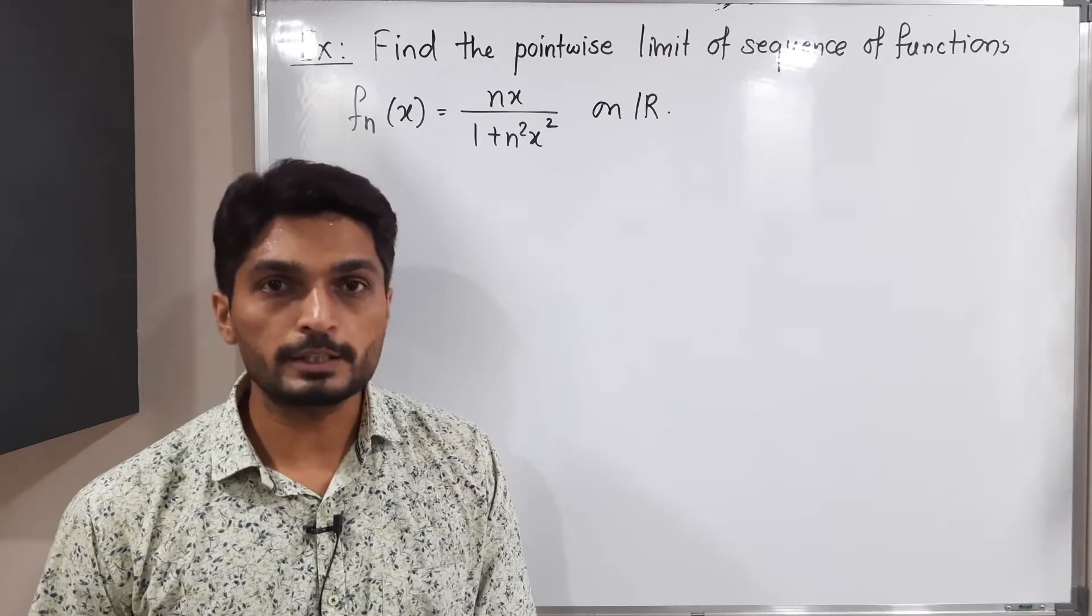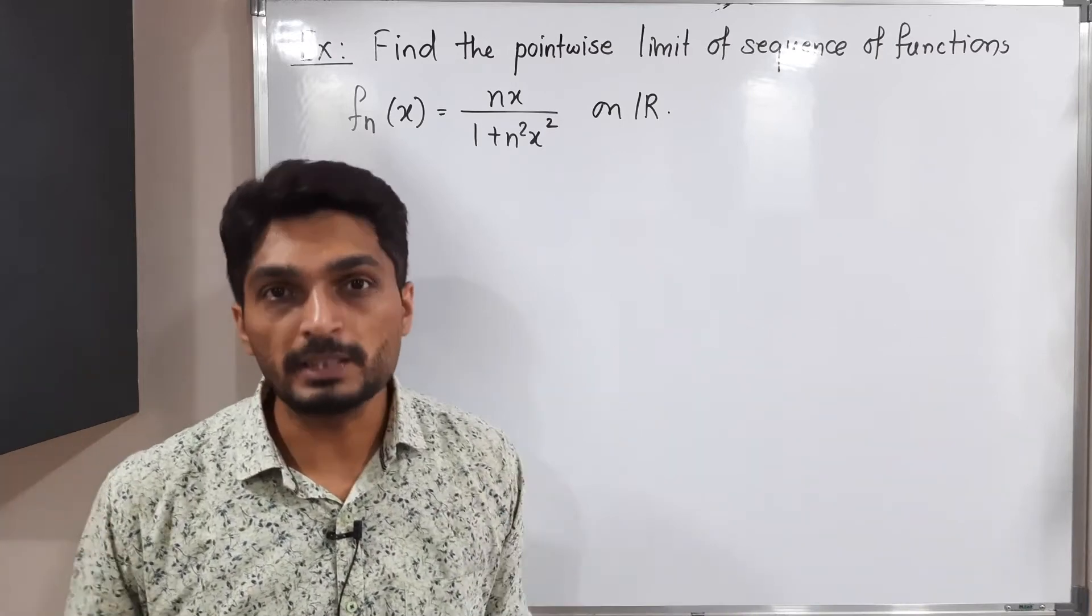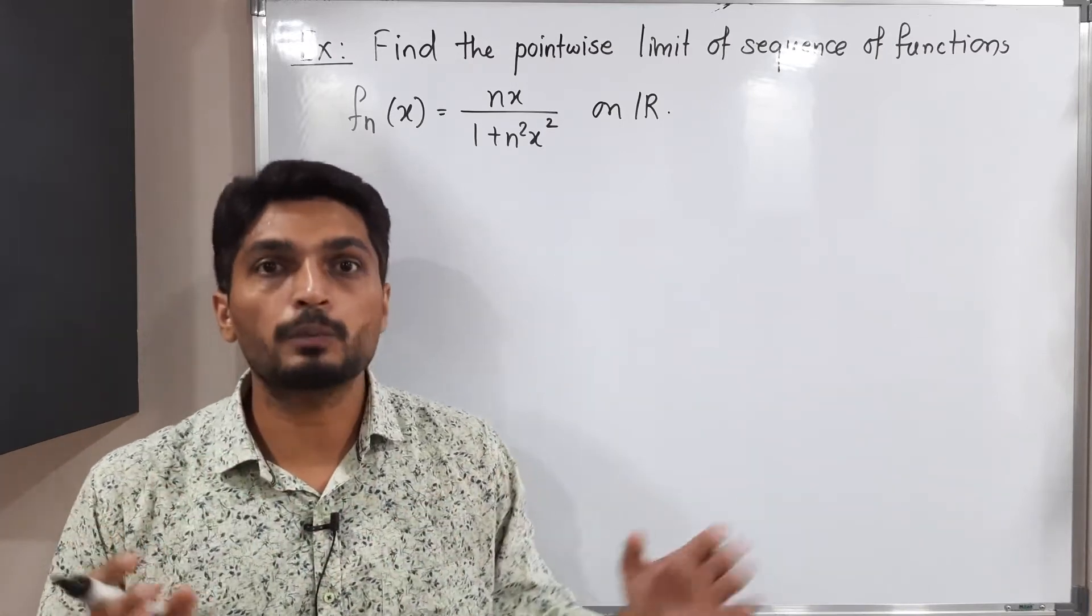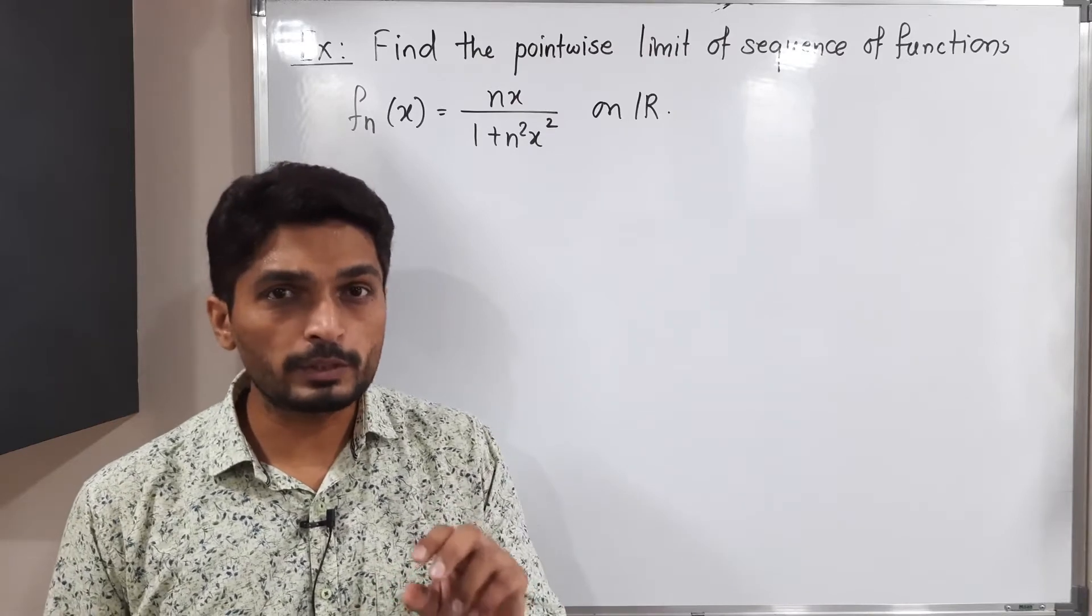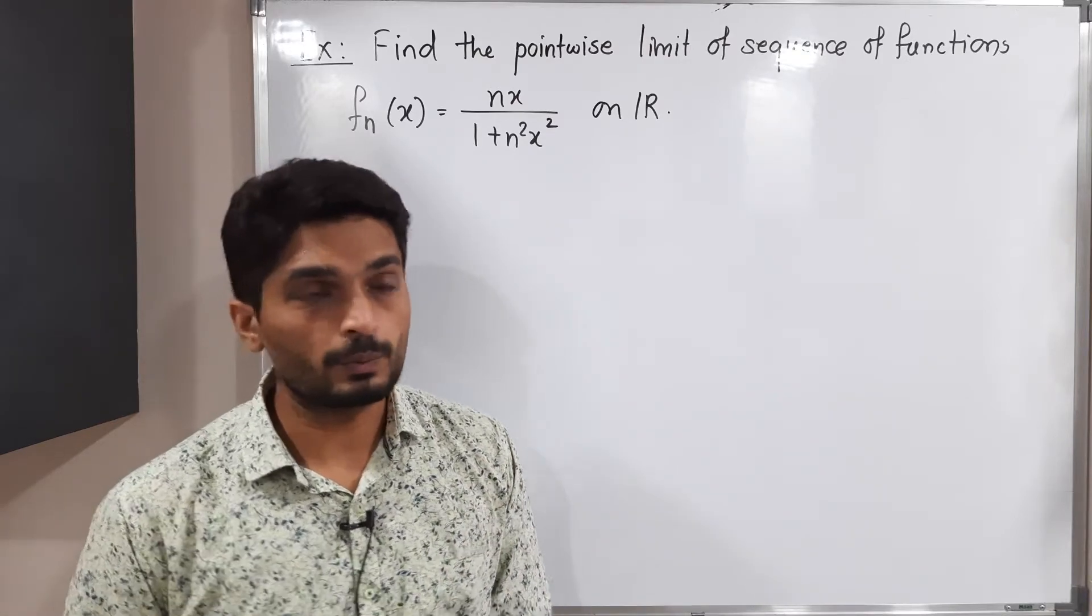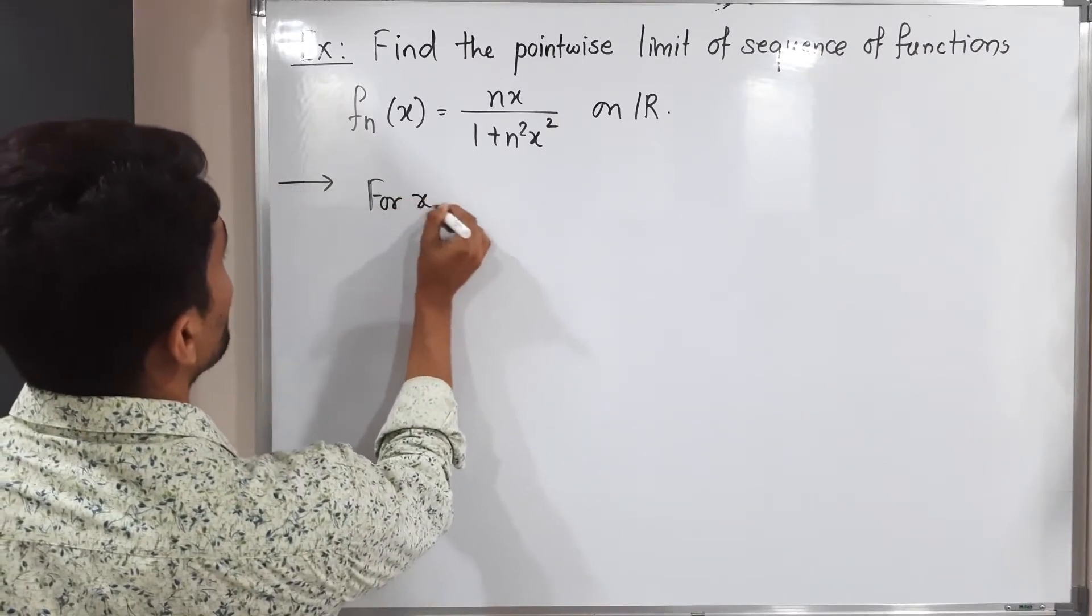Let us find its pointwise limit. We have an interval from negative infinity to plus infinity, that means entire ℝ. Normally zero can create a problem, so I'm going to discuss a separate case for x=0. Let us discuss for x=0.